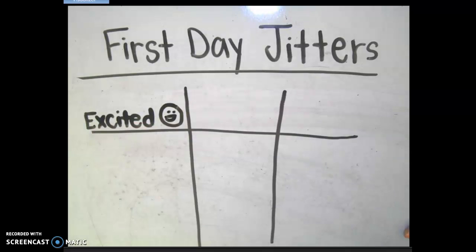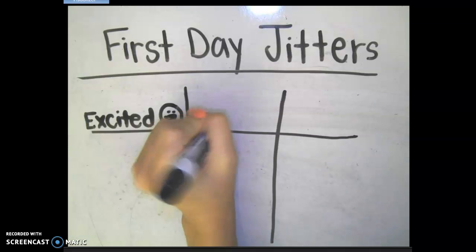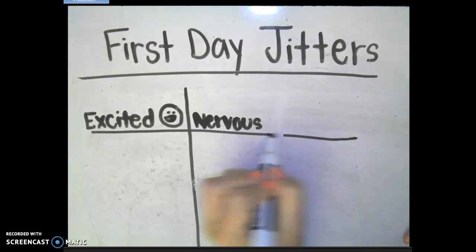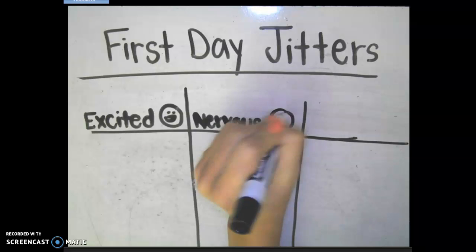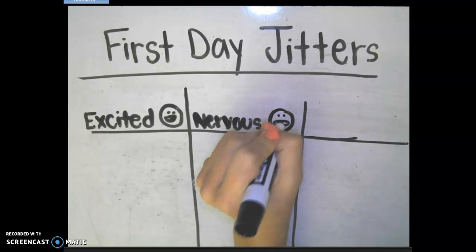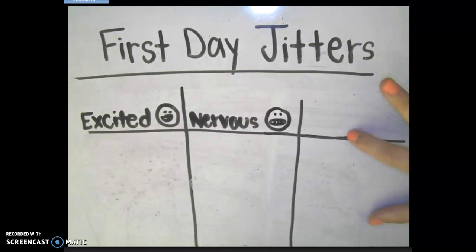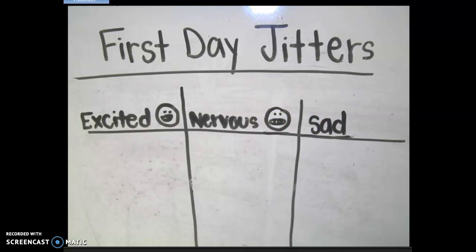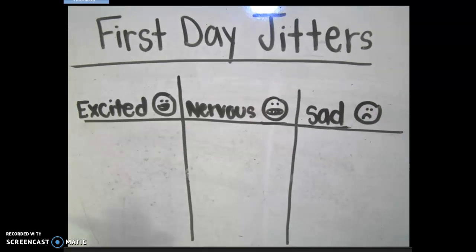I'll draw a happy face. In this column, I'm going to put the votes of people who said they were nervous. I'm going to draw a little face — it kind of looks weird, but that isn't the best nervous face I could draw. And then over here, I'm going to record the votes of the people who said that they were sad about the beginning of school. I'll draw a sad face. So here are my three categories: excited, nervous, and sad.